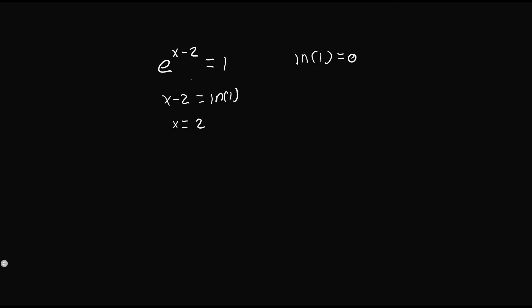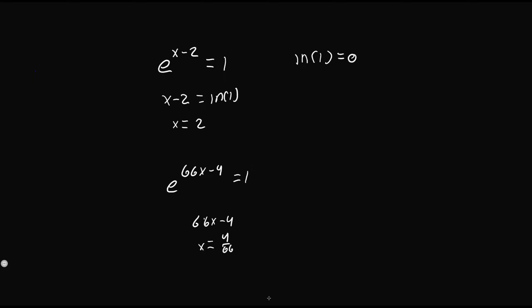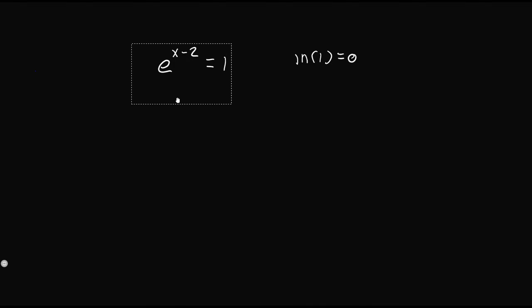So anytime you're given something like e to the power of (66x minus 4) is equal to 1, just go ahead and set the exponent equal to 0: solve 66x minus 4 equals 0 to get x equals 4/66, which reduces to 2/33. That is how we solve any exponential equation with e on the left equaling 1 — a quick tip so you never get confused.